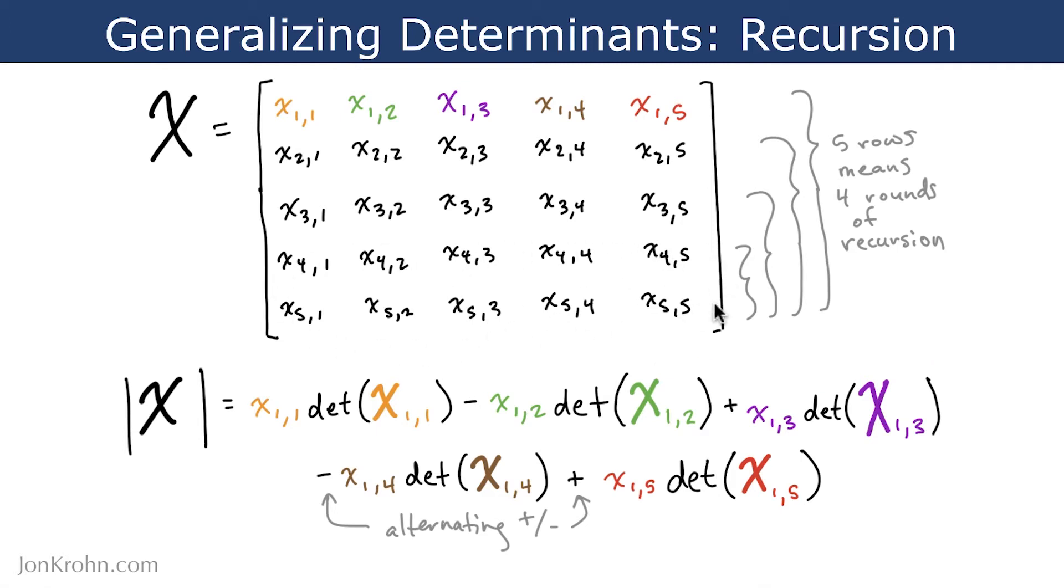So we would start off by calculating determinants for 2x2 matrices in this bottom two rows here, and then once we have those results, we can use them to calculate determinants for the 3x3 matrices in the bottom three rows here, and then we can again use those values to calculate 4x4 determinants, and finally, with that in place, we can calculate the 5x5 determinant.